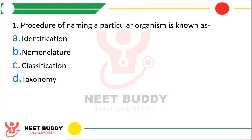Question 1. The procedure of naming a particular organism is known as: Option A, Identification; Option B, Nomenclature; Option C, Classification; or Option D, Taxonomy. The correct answer is Option B, Nomenclature.